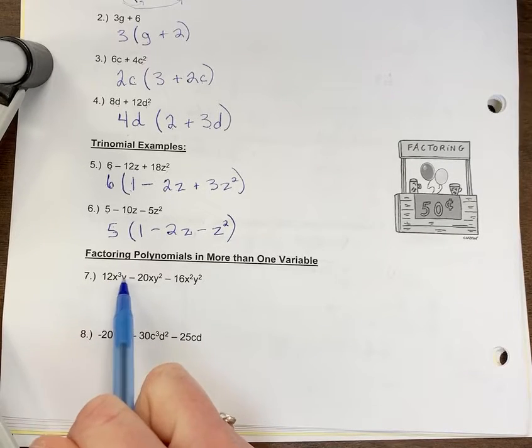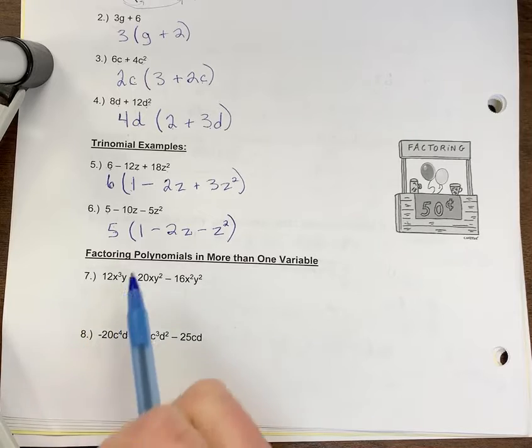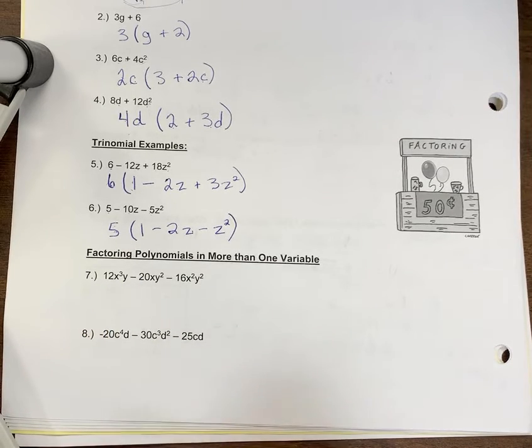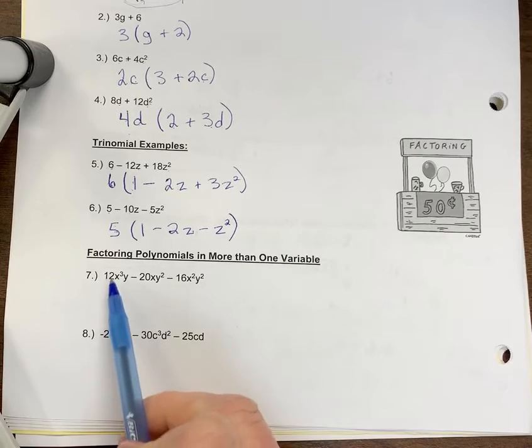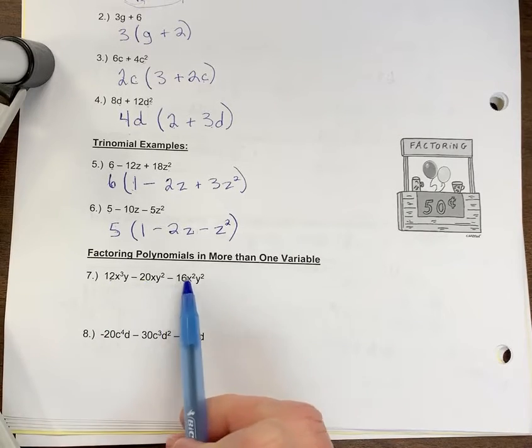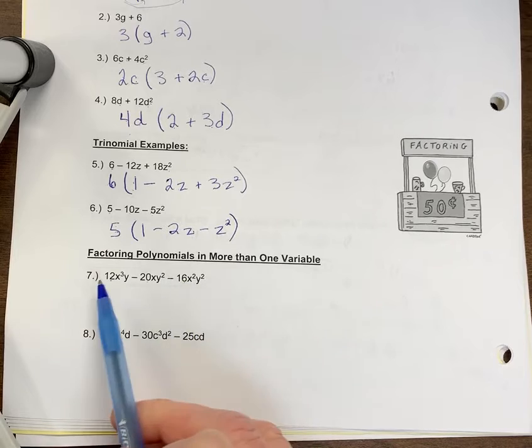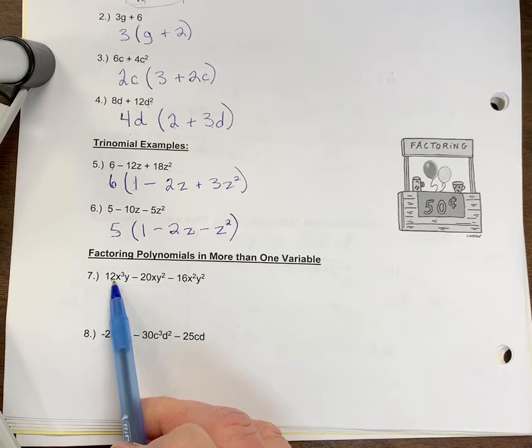When we get to these variables x and y, we will do that. Let's start with the greatest common factor for the coefficients. Remember, coefficients are the numbers in front, so I want to find the largest number divisible by 12, 20, and 16.